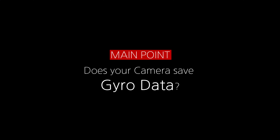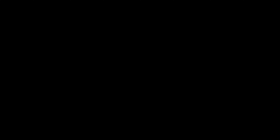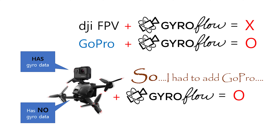제일 중요한 것은 내 카메라가 자이로 데이터 값을 저장하냐 안 하냐에 대한 이야기입니다. DJI FPV 카메라는 자이로 데이터를 저장하지 않기 때문에 자이로플로우를 지원하지 않아요. 하지만 고프로는 자이로 데이터 값을 저장하기 때문에 자이로플로우를 지원하겠죠. 그러니까 어쩔 수 없이 FPV 위에다가 고프로를 달아서 날리고 있었던 겁니다.